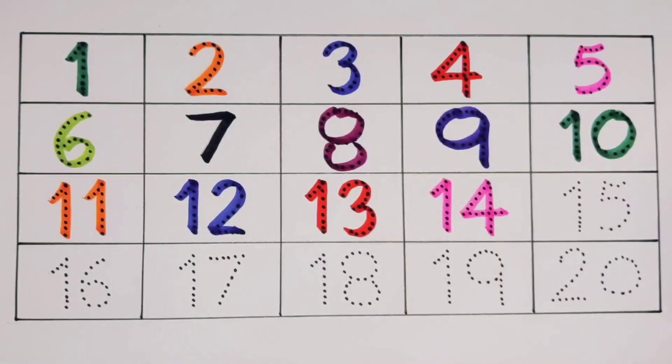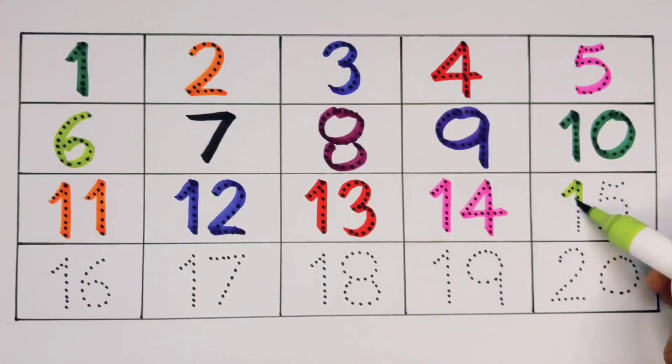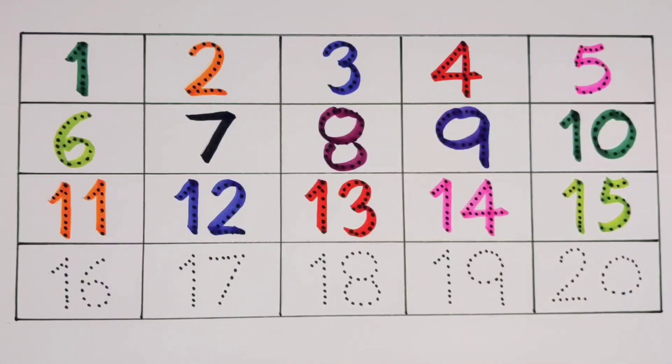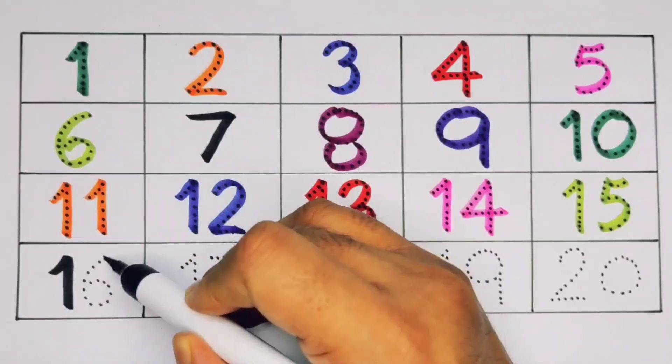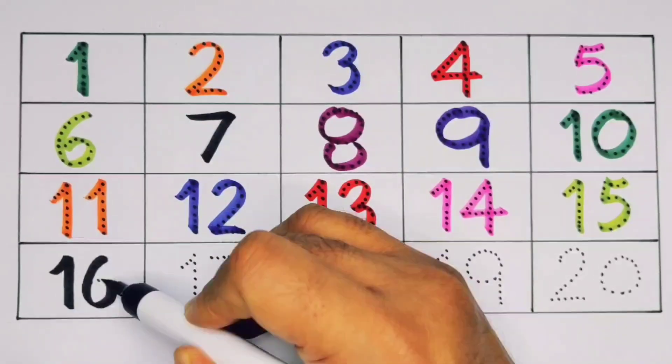What will next kids? It's fifteen, one five, fifteen, number fifteen. Next, sixteen, one six, sixteen, number sixteen.